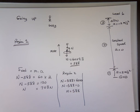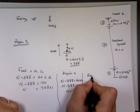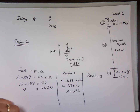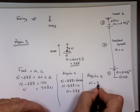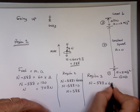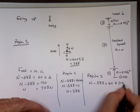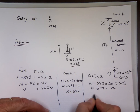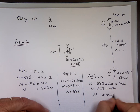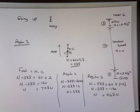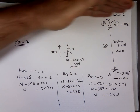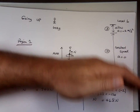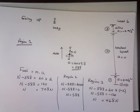In region 3, the elevator slows down — acceleration is negative 2 meters per second squared. N minus 588 equals 60 times negative 2 equals negative 120. So N equals 468 Newtons — you appear to weigh less. And on the way down, the same logic applies in reverse: when starting downward you weigh less, constant speed gives your real weight, and slowing down at the bottom makes you weigh more.